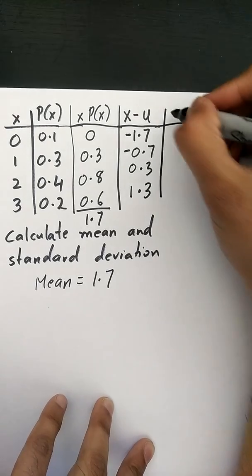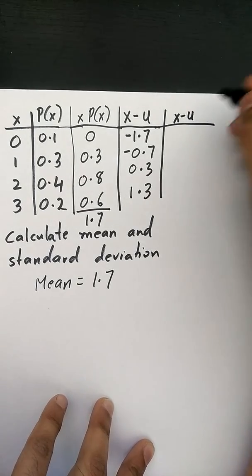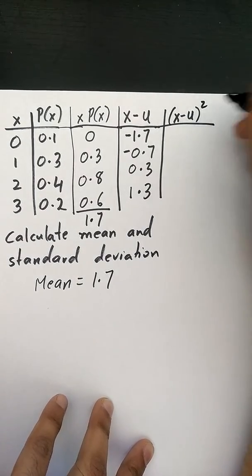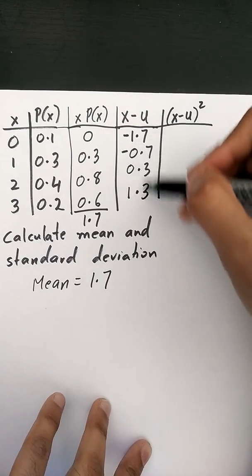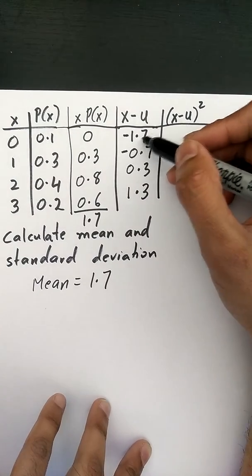The next column is going to be your x minus your mean squared. So you're basically taking this column right here and you're squaring each value.